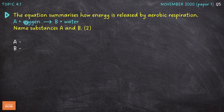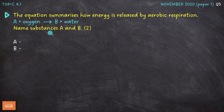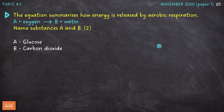Question number one. The equation summarises how energy is released by aerobic respiration: A plus oxygen equals B plus water, and you need to name substances A and B for two marks. You really need to know the equations for aerobic and anaerobic respiration. These questions come up quite often, and it's really easy marks if you've learned the equation. Substance A is glucose and B is carbon dioxide.